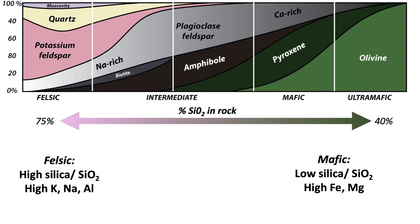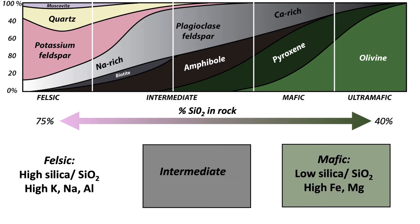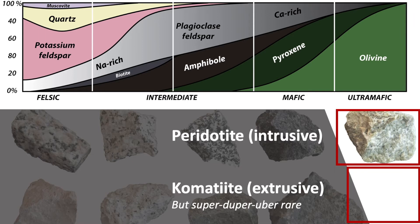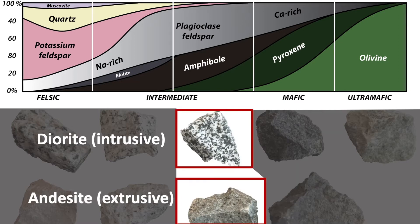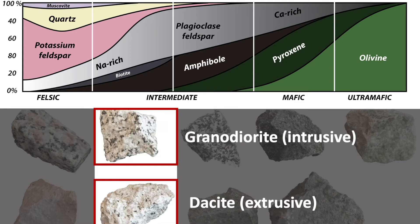Rocks that are in between mafic and felsic are varying degrees of intermediate composition. Specific rock names are based on their mafic, intermediate, or felsic composition. Peridotites and komatiites are ultramafic, consisting primarily of olivine and pyroxene. Gabbro and basalt are mafic and consist of olivine, pyroxene, calcium-rich plagioclase feldspar, and some hornblende. Diorites and andesites are on the mafic end of intermediate and consist of pyroxene, hornblende, and plagioclase feldspar. Granodiorite and dacite are on the felsic end of intermediate and consist of sodium-rich plagioclase feldspar, some hornblende, some potassium feldspar, and some quartz. There may also be minor amounts of muscovite and biotite micas present.